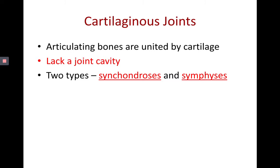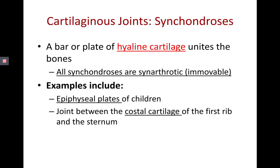Those connected by hyaline cartilage are called synchondroses, and those connected by fibrocartilage are symphyses. If you have a bar or plate of hyaline cartilage uniting bones, that's a synchondrosis. These are completely immovable. They're located at the epiphyseal plates — between the diaphysis and epiphysis of long bones in children — and also at the costal cartilage, between the ribs and the sternum.